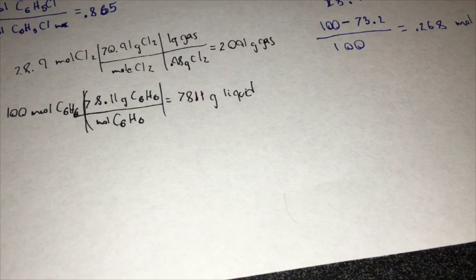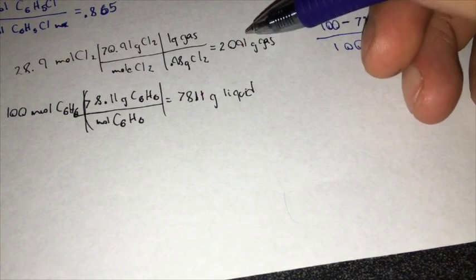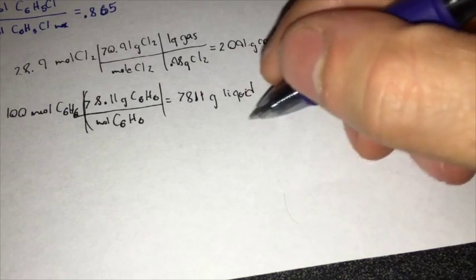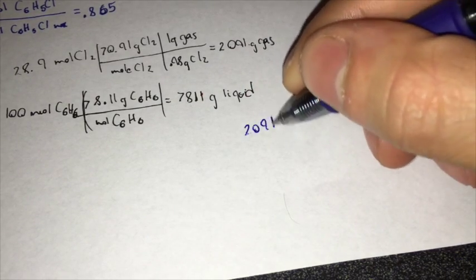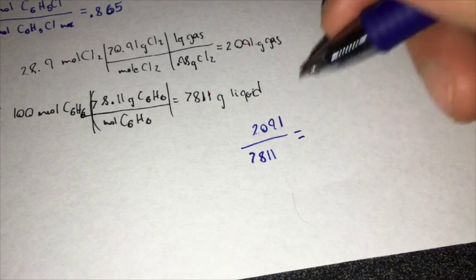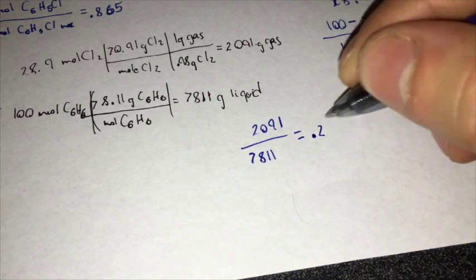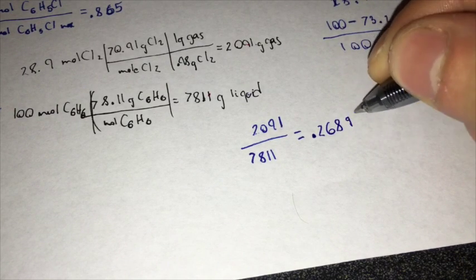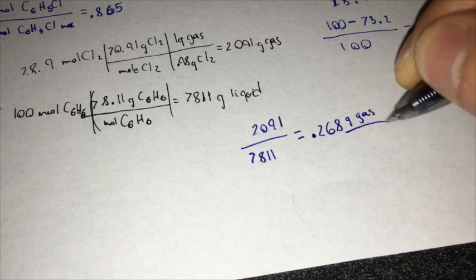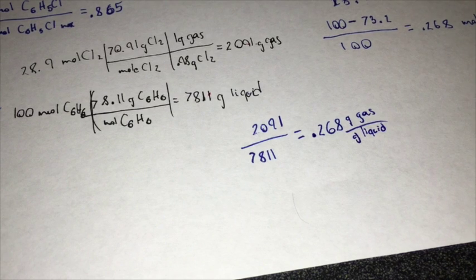With this we can calculate the mass ratio of the gas feed to the liquid feed with these two just by dividing the grams of gas over the grams of liquid. So 2,091 over 7,811 is going to be equal to our answer, 0.268 grams of gas over grams of liquid. And that's it for this problem.